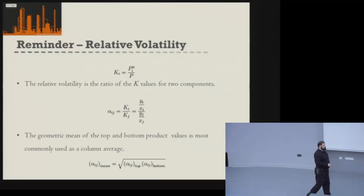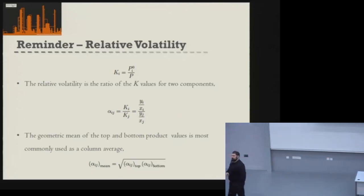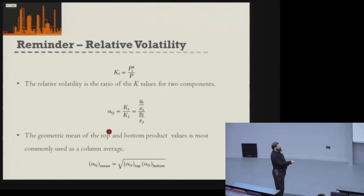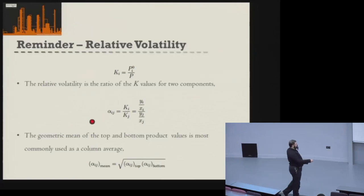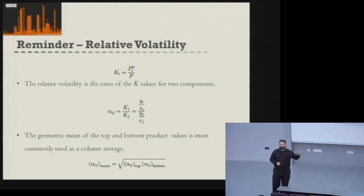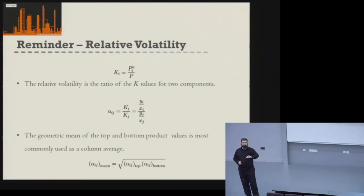For distillation, we define what's called the relative volatility — the ratio between the K value of one component and the K value of a second component. We call the second component the reference component, and all other components in our system are compared to it. So we get a relative volatility for all components compared to one reference component.